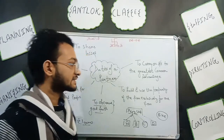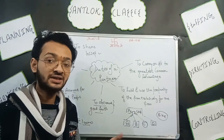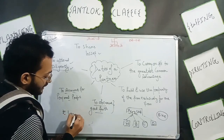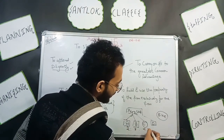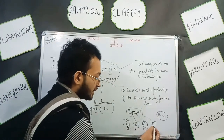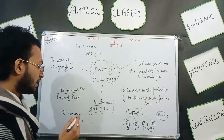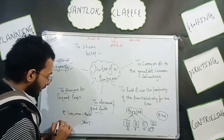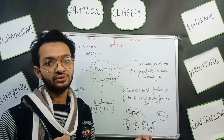Next is to share losses — this is very important. If this is not followed, the partnership firm cannot run for long. Suppose the firm made a profit of one lakh rupees with a profit-sharing ratio of 2:3:4:5. All partners were happy. But now suppose in 2017 the firm suffered a loss of three lakh rupees.